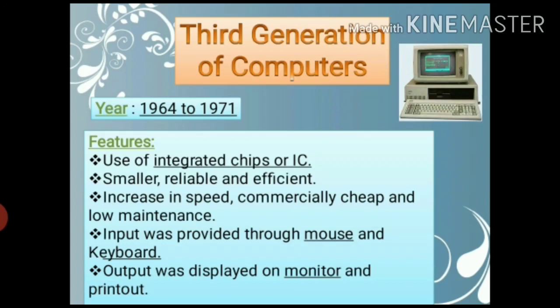3rd generation computers were developed in 1964 to 1971. Integrated chips, or integrated circuits, were used in this generation. They were smaller, reliable, and efficient. Input was given by keyboard and mouse. In this generation, output was displayed by monitor. See in the picture how a 3rd generation computer looked.